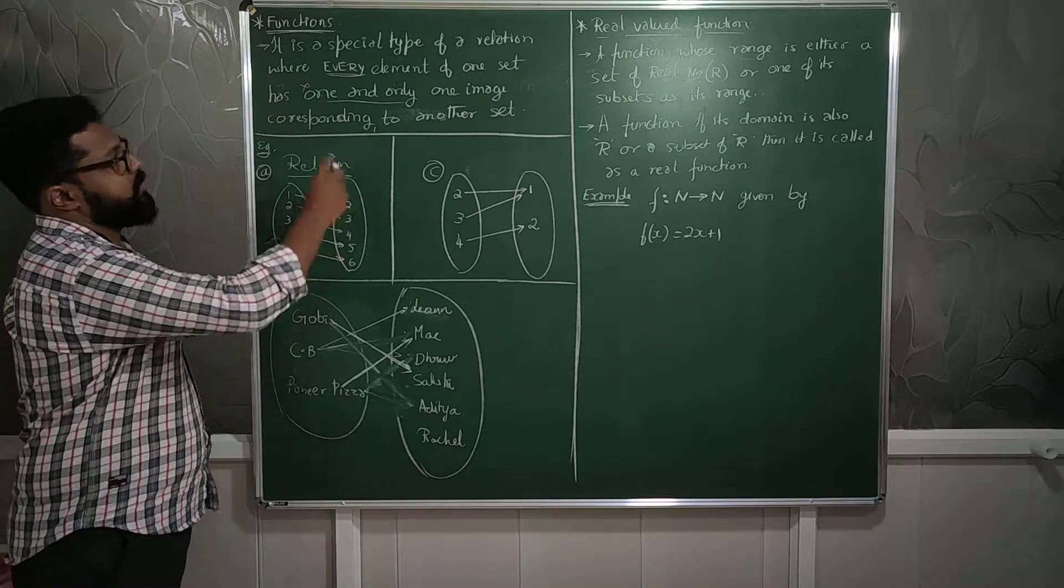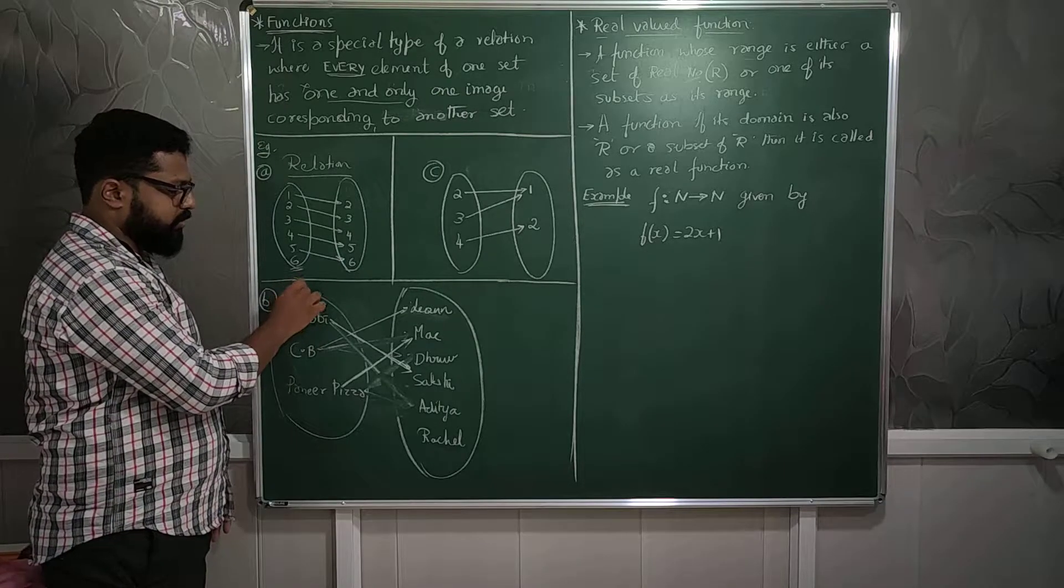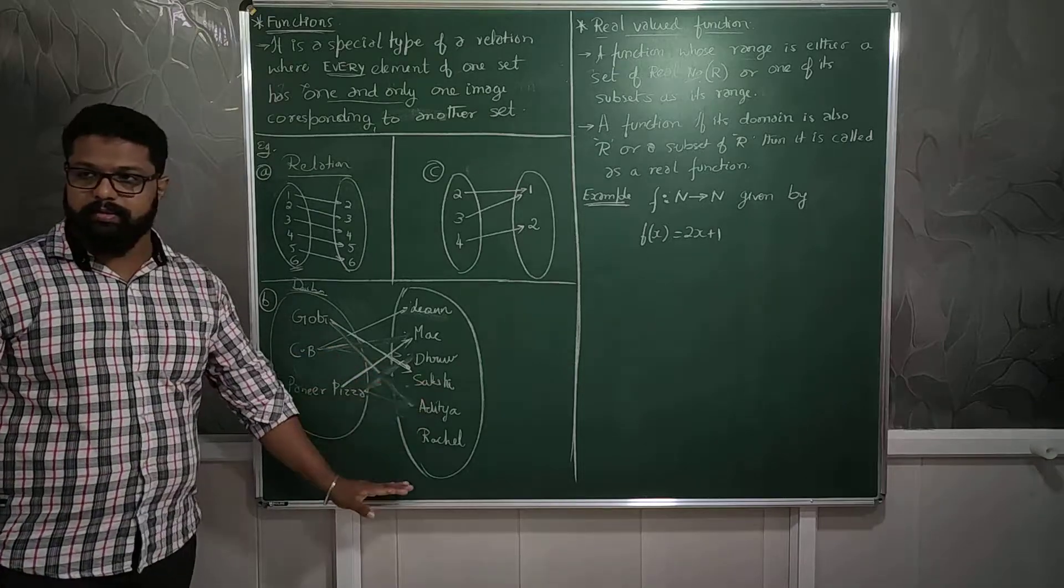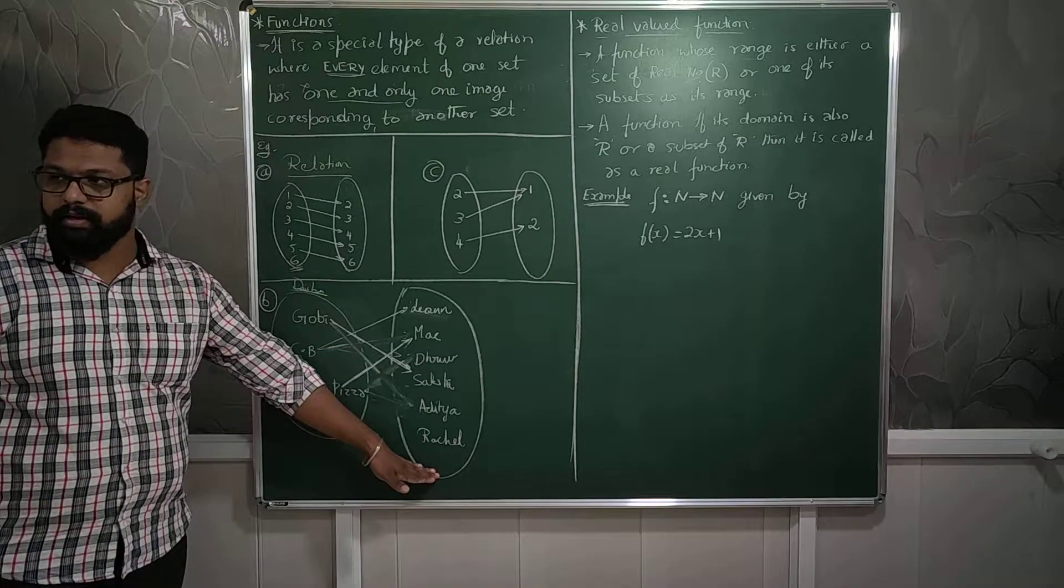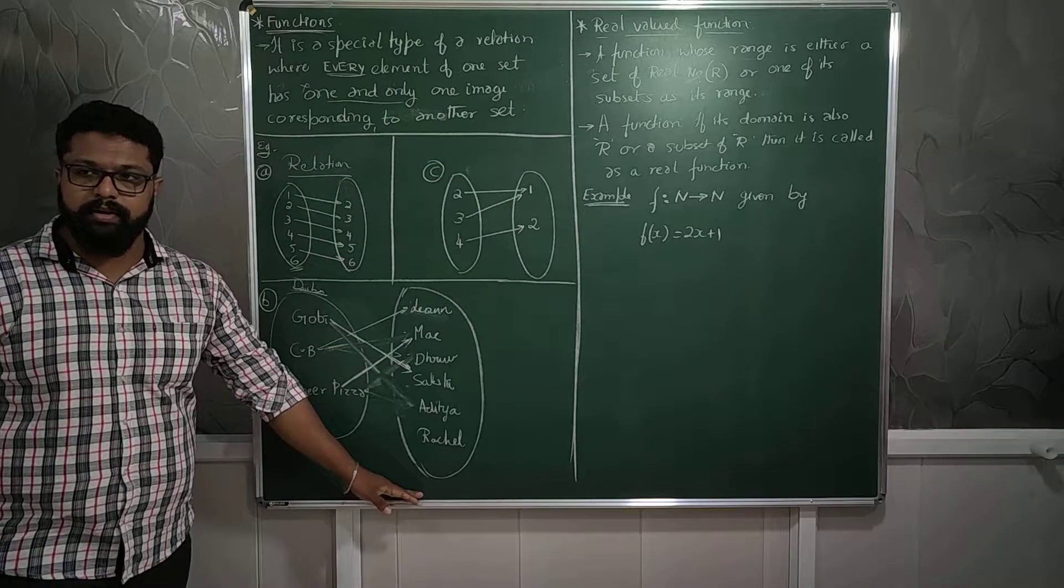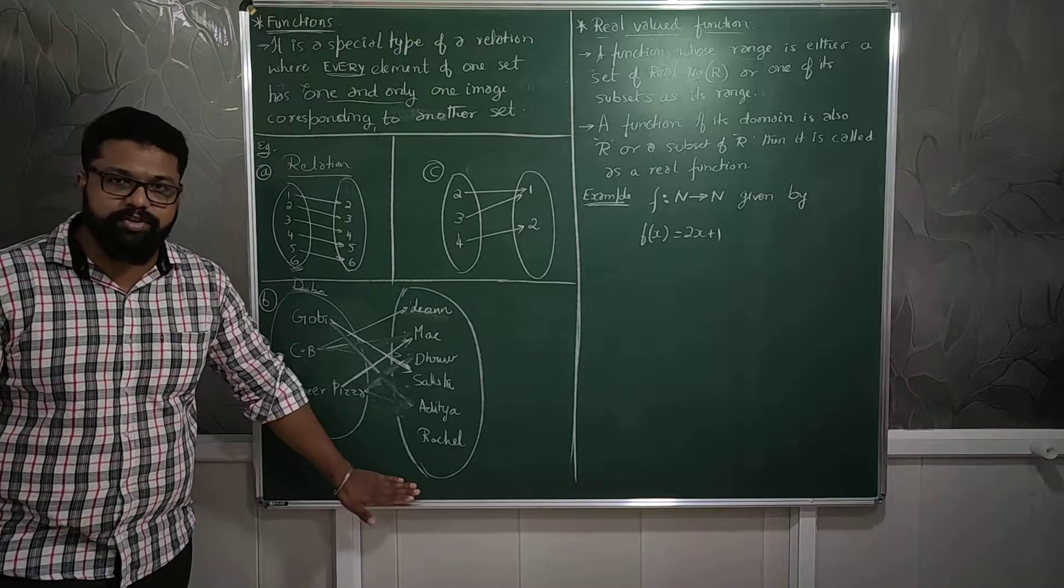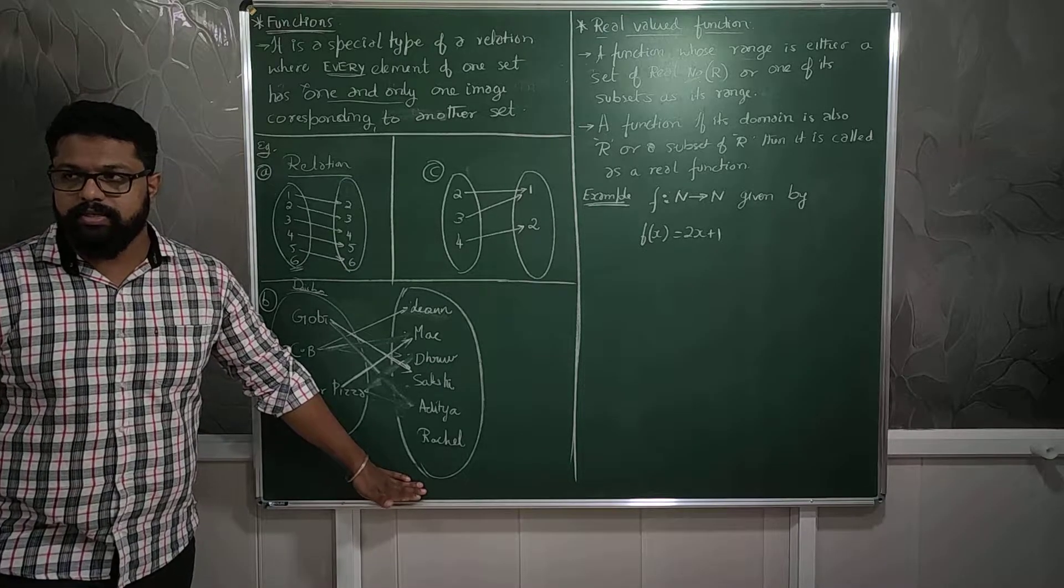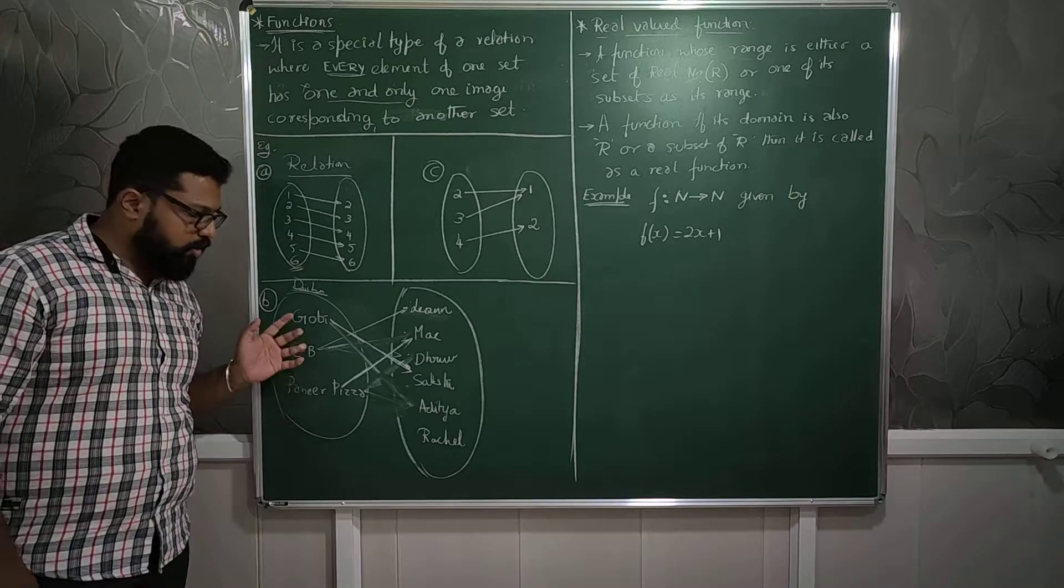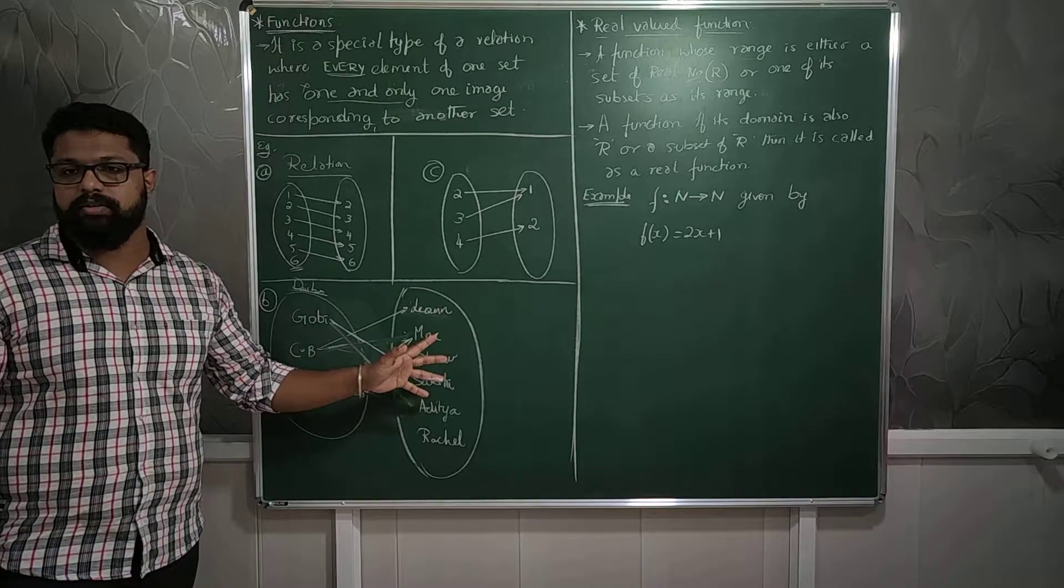You can see, every element of one set, that is the dishes set, is linked to other elements. Images need not be complete. Images can be many, there can be many people. But all the elements of the first set have to have an image in the second set, and only one image, not multiple.